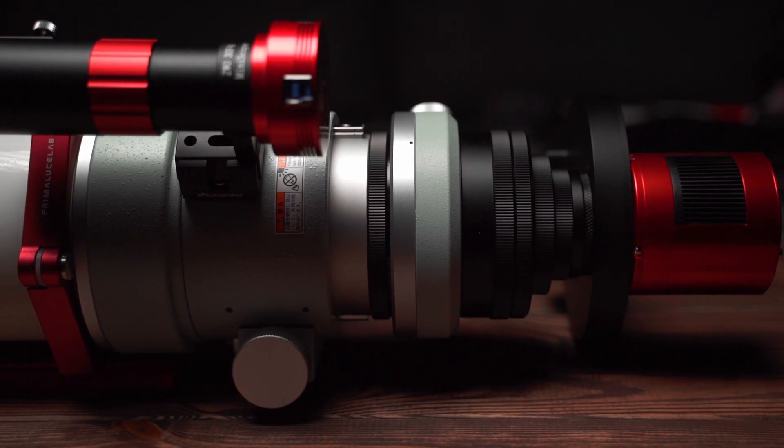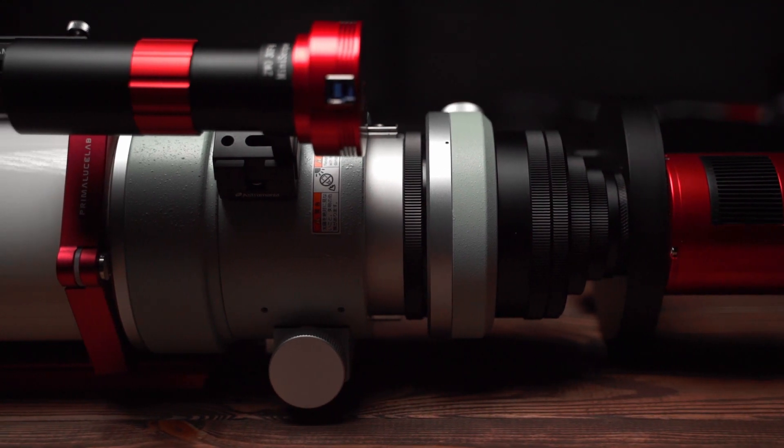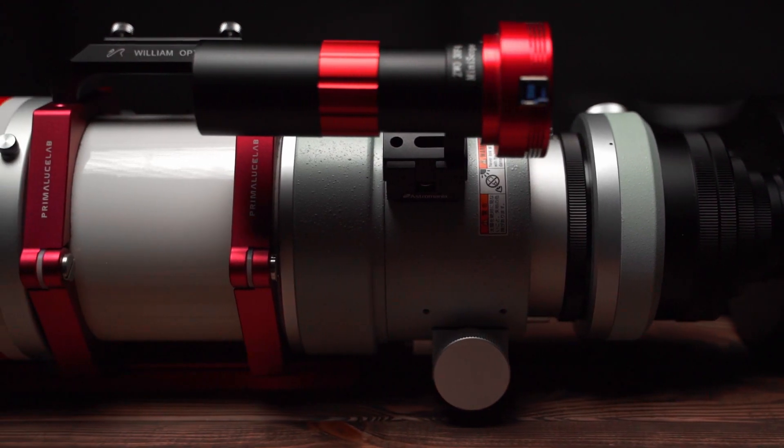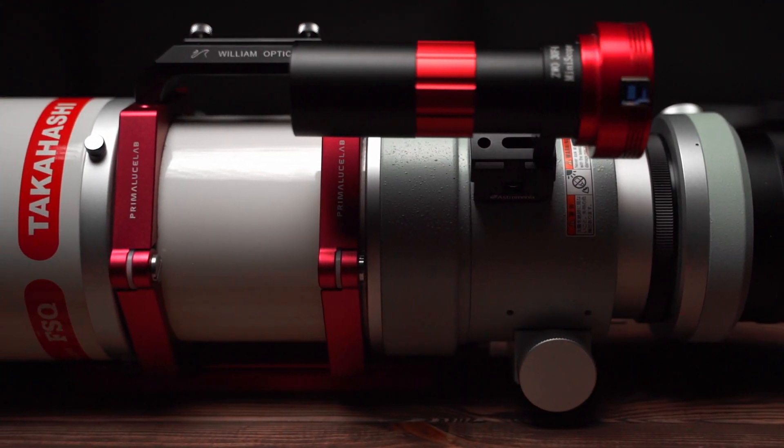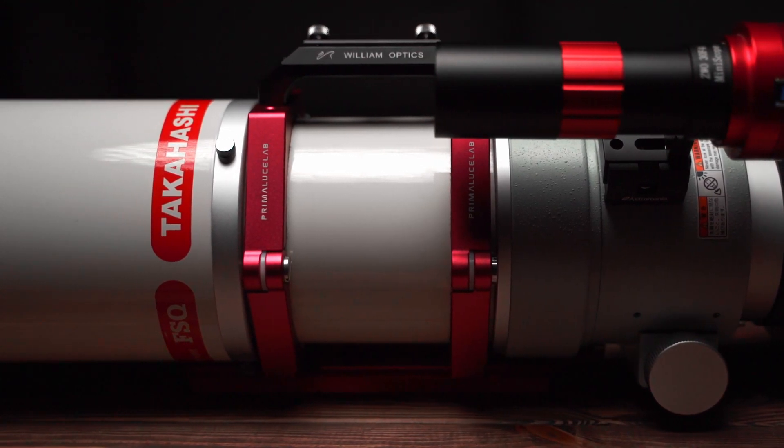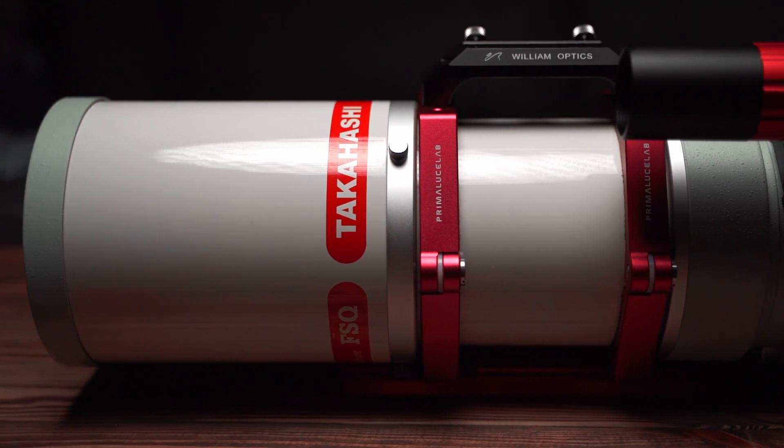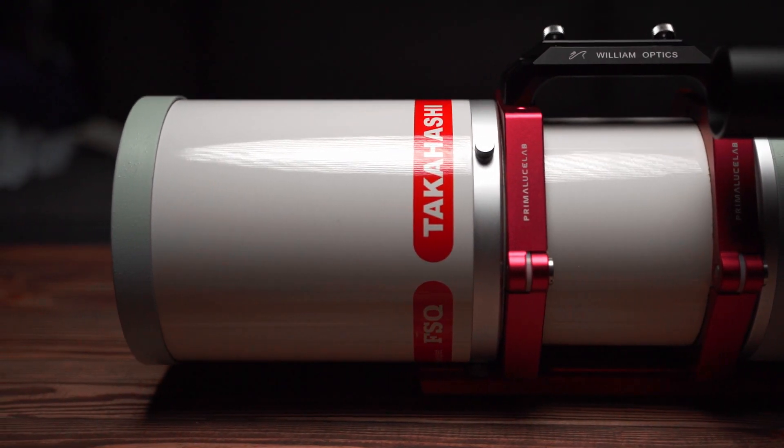Also, this telescope is advertised that it can be placed in a carry-on luggage. I tried to put it in my Think Tank version 3.0 airport carry-on luggage. It worked really well and I didn't even remove all the parts attached to the back of the telescope, which makes FSQ106 become one of the best portable telescopes to travel with.